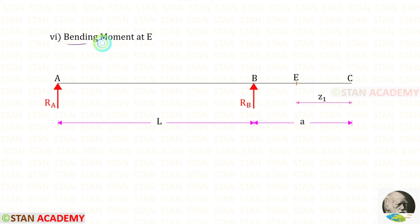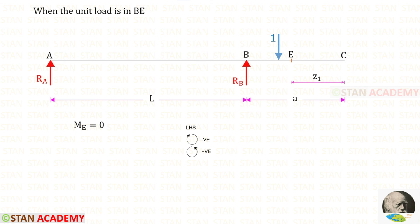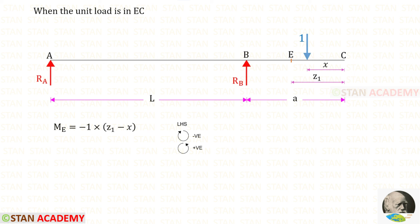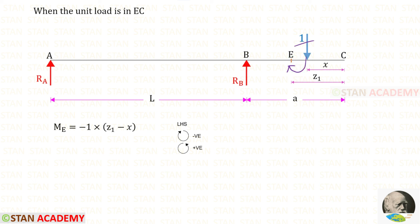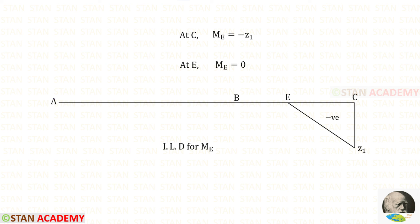Now let us draw the ILD for the bending moment at point E. When the unit load moves from A to B, the moment at E will be 0 because there is no load in EC. When the unit load moves from B to E, Me will also be 0. Now let us keep the unit load between E and C at a distance of X from C. The unit load is acting in the clockwise direction so it will be negative. This distance is Z1 minus X. At point C, X equals 0, so Me equals minus Z1. At point E, X equals Z1, so Me equals 0. Here you can see the ILD for Me.